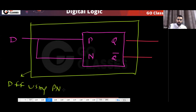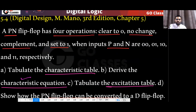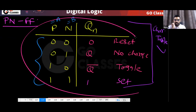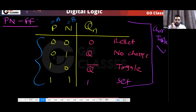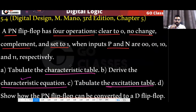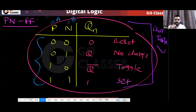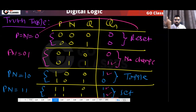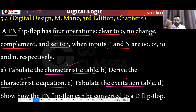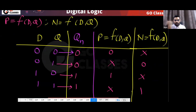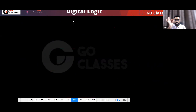So the implementation of a D flip-flop using a PN flip-flop just requires connecting D directly to both P and N inputs. This was the original Morris Mano question. We found the characteristic table (given), derived the truth table, found the excitation table, and converted the PN flip-flop to a D flip-flop. Did everyone understand everything?